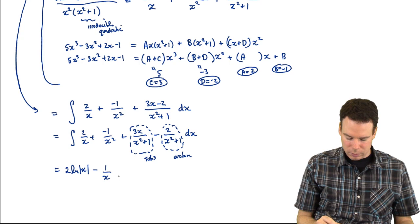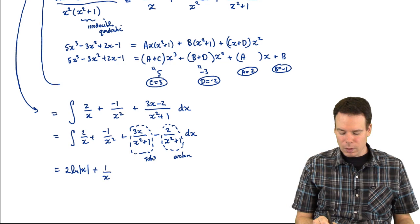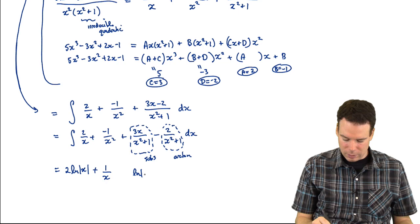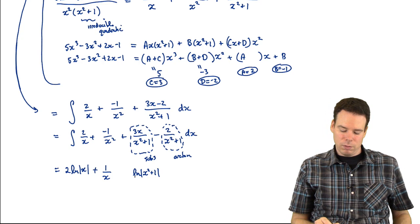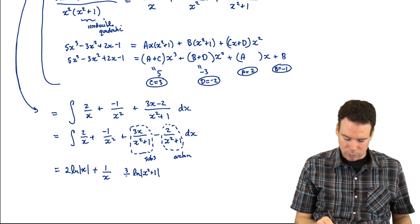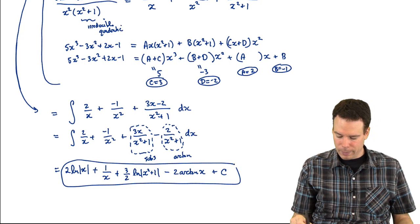The anti-derivative of 2 over x is 2 ln|x|. The anti-derivative of negative 1 over x² gives positive 1 over x. For (3x minus 2) over (x² plus 1): splitting gives (3/2) ln(x² plus 1) from the substitution part, and minus 2 arctan(x) from the arctan part. So the final answer is 2 ln|x| plus 1/x plus (3/2) ln(x² plus 1) minus 2 arctan(x) plus C.